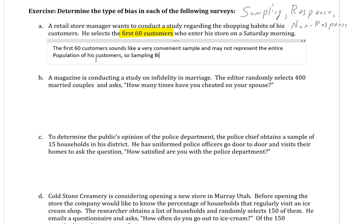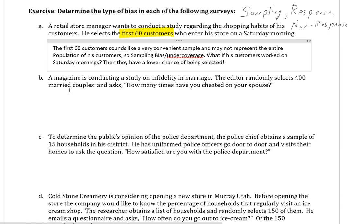There's a lot of problems with this. It's just the first 60 customers on a Saturday morning. So for example, what if his customers worked on Saturday mornings? Then they have a lower chance of being selected. Or maybe they work late and they're sleeping still at that point. Or maybe they don't typically shop on Saturdays. There's a lot of reasons why that can incorporate sampling bias there. So the main thing here, just try to pick it apart. Think about all the problems that could arise in how they selected these samples.